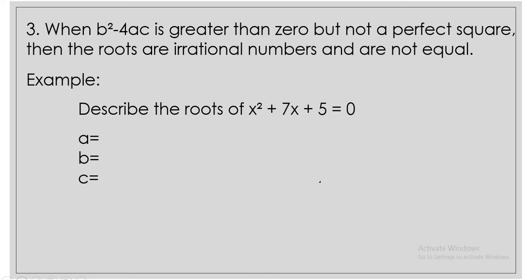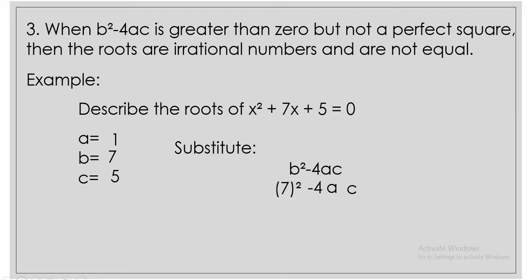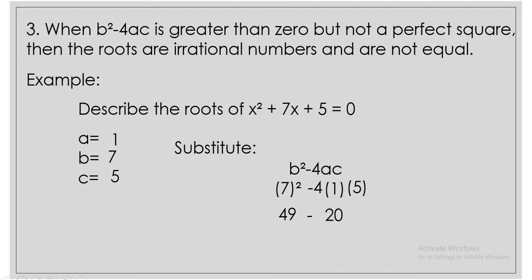Find the value of a, b, and c, which is 1, 7, and 5. Let us now substitute it into the discriminant, which is b squared minus 4ac. So b is 7, a is 1, and c is 5. Let us now simplify it. 7 squared is 49. 4 times 1 times 5 is 20.